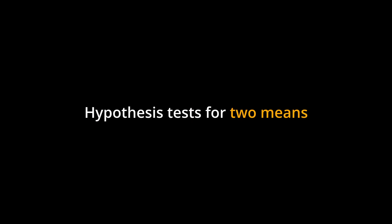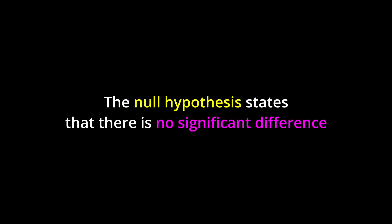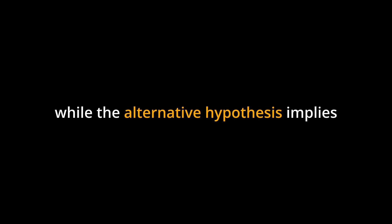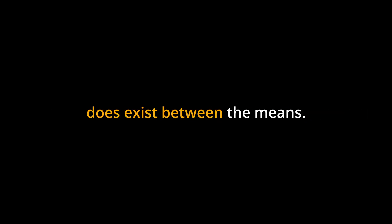Key Points. Hypothesis tests for two means compare the means of two populations to determine if there is a significant difference between them. The Aspen-Welch t-test is used when the population standard deviations are unknown and possibly unequal. The null hypothesis states that there is no significant difference between the means of the two populations, while the alternative hypothesis implies that there is evidence to reject the null hypothesis and that a statistically significant difference does exist between the means.